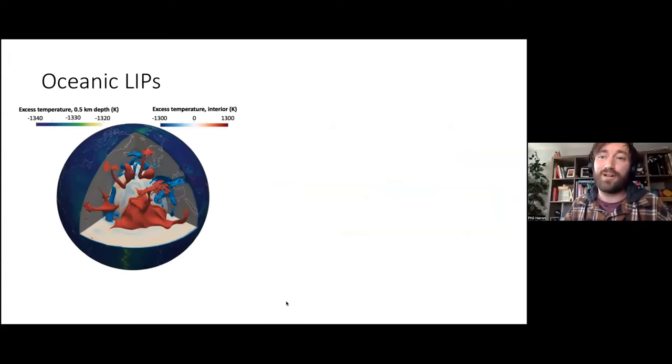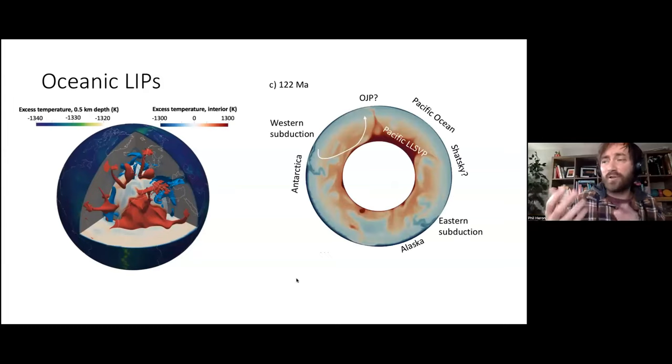What we found in these models, if you just take a slice, you can actually generate subduction-driven backflow to generate these oceanic LIPs. This is showing that Ontong Java Plateau can form at the same time and in the same place just due to the subduction at the end of the supercontinent. This work we'll be talking about at EGU again. I've just talked about it for about 45 seconds there, but we can talk about it more after.